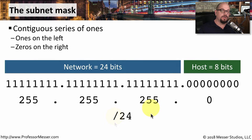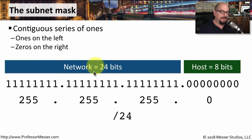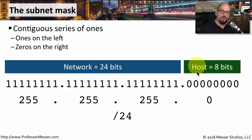So for a subnet mask of slash 24, we know that that is the size of the network. The remaining bits — which would be eight bits in this case — would be the number of bits available for hosts.